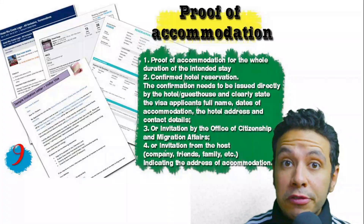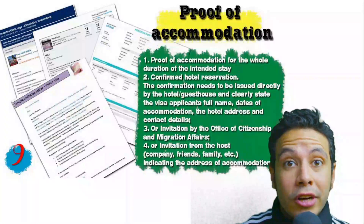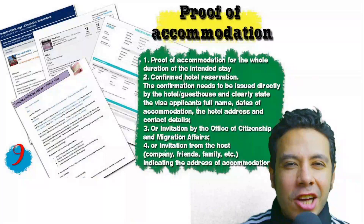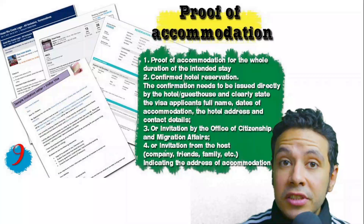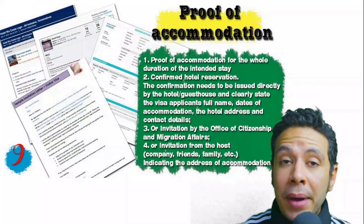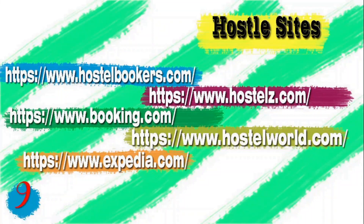You will also need to provide proof of accommodation. This could be a confirmed hotel reservation, an invitation from a host in the country, or an invitation from an organization you are visiting. For a hotel or hostel, an initial booking is generally acceptable, but sometimes a confirmed booking is required. The hotel name, address, and contact number must be mentioned. If invited by a person, the invitation letter should be mailed directly to the embassy or submitted by you along with a copy of that person's passport.